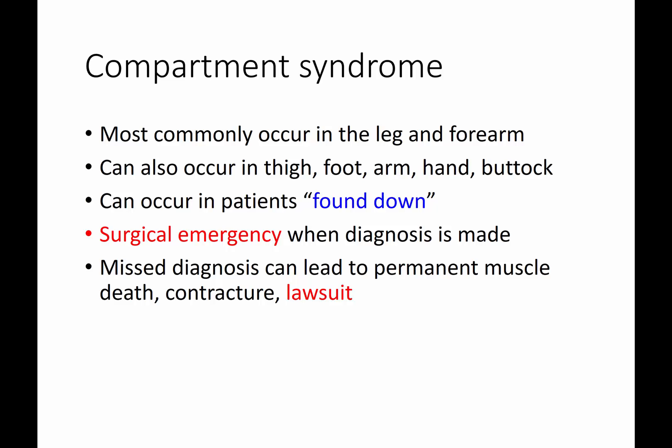Compartment syndrome most commonly occurs in the leg and in the forearm. It can also occur in the thigh, foot, upper arm, hand, and buttock. It can occur in patients who were found down — for instance, someone who has overdosed on drugs and is obtunded for a long period of time. They are at very significant risk for compartment syndrome on the parts of their body they're lying on, motionless, potentially on a hard floor. It is a surgical emergency when diagnosed, and if you miss it, this can lead to permanent muscle death, contractures, and lawsuits.